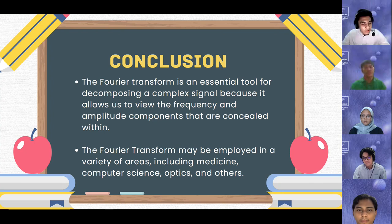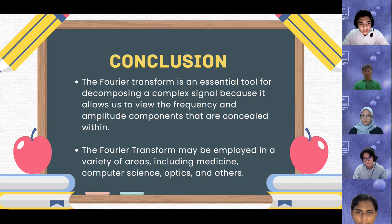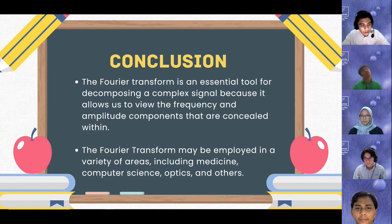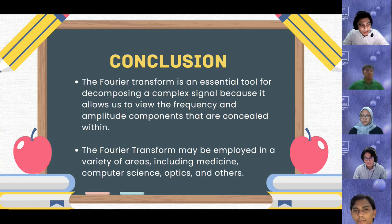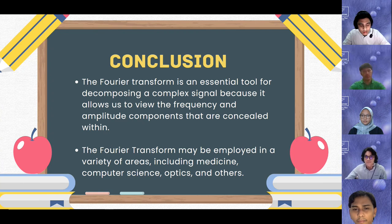Bismillahirrahmanirrahim. My name is Ahmed Yazik. For the conclusion, we could summarize that the Fourier transform is an essential tool for decomposing a complex signal, as it allows us to view the frequency and amplitude components concealed within. The Fourier transform is a mixed domain transform where input data is considered as an image with the intended output being a processed version of that image. The Fourier transform may be employed in a variety of areas including medicine, computer science, optics, and others. An MRI image is one example of a device that uses Fourier transform. In summary, Fourier transform plays a critical role in a variety of MRI applications and image assessment. That is all our presentation for today. Thank you.